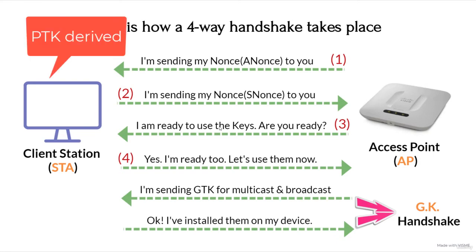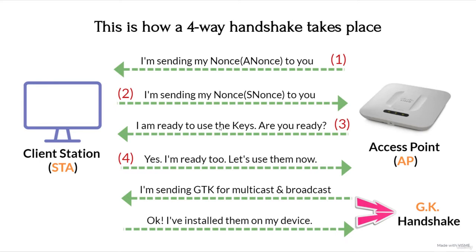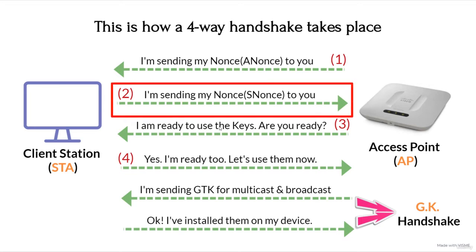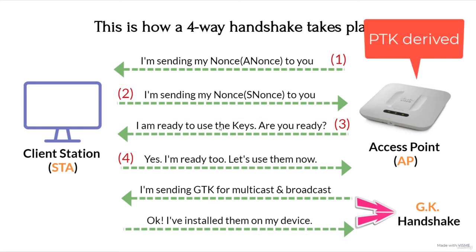You use my nonce to calculate the PTK, or Pairwise Transient Key. I have not shown the PTK because it will be confusing, but using my nonce you calculated the PTK. Once you calculate it, you send me a message stating that you are sending your nonce, which is the SNonce, to me. Now I get your nonce and I calculate the PTK for me.